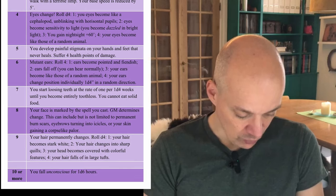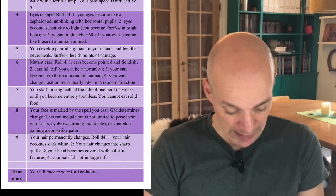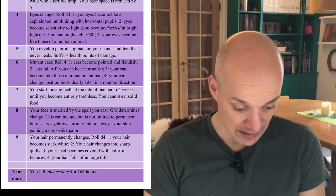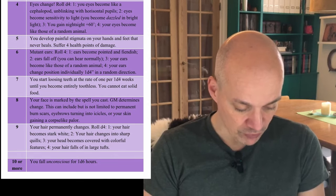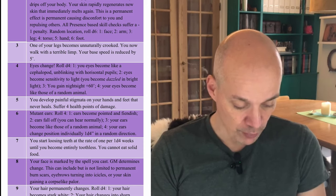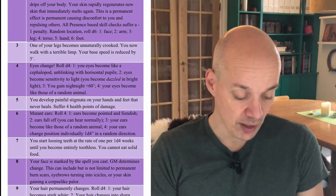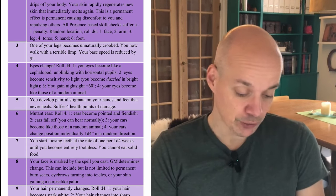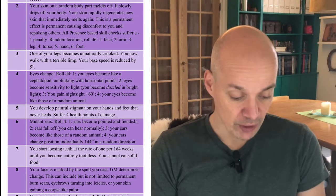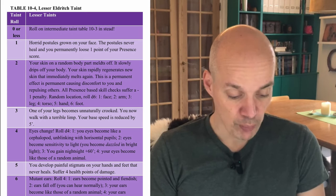Looking at the lesser Eldritch Taint table: rolling 10 or more means you fall unconscious for 1–4 hours — bad in combat but no long-term penalties, the best possible result. A more average roll of 5 means you develop painful stigmata on your hands and feet that never heal, and suffer 4 health points of damage. The stigmata remains and creates interesting roleplaying opportunities. Rolling as low as 1 means you develop horrid pustules across your face that never heal, permanently losing one point of Presence.